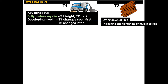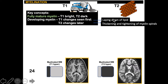This corresponds to T2 dark signal — the adult configuration. In the adult configuration we have T1 bright and T2 dark signal, and the earliest this configuration is seen is at 24 months.